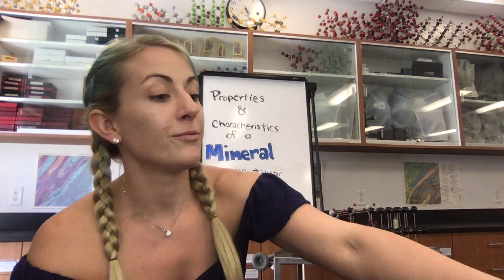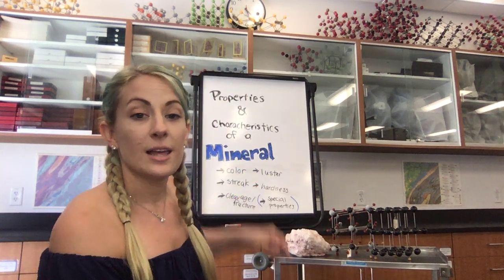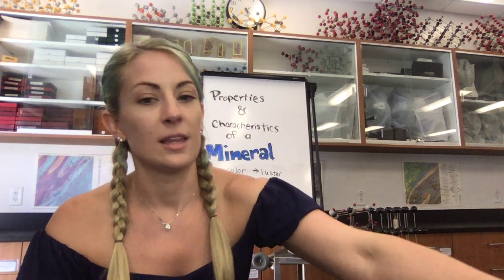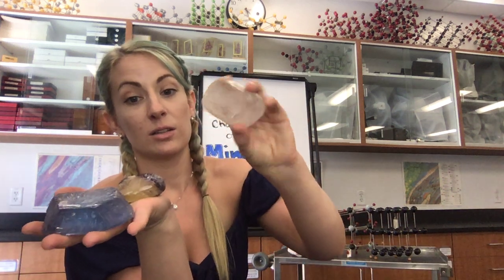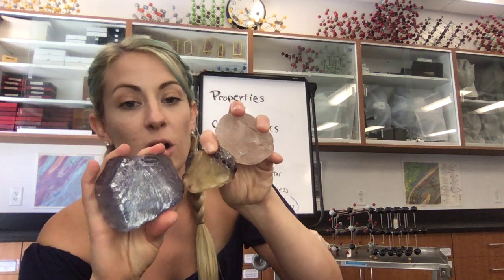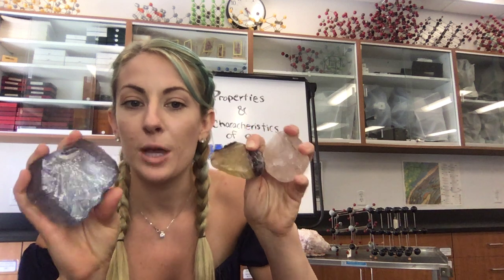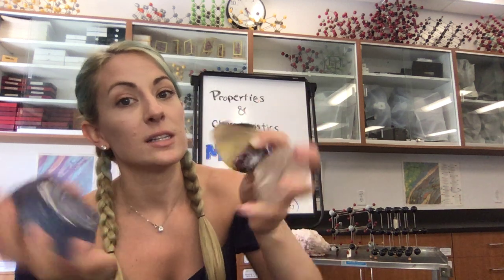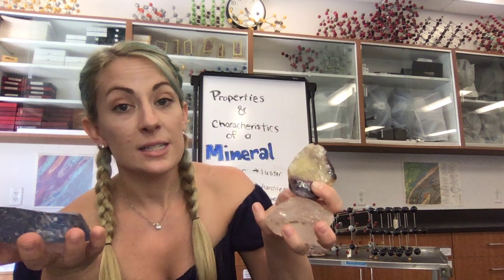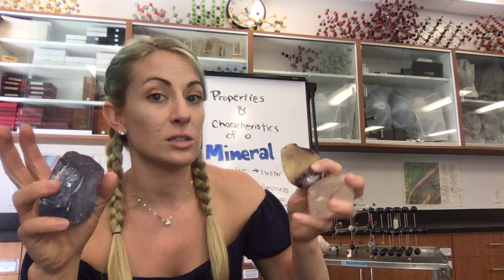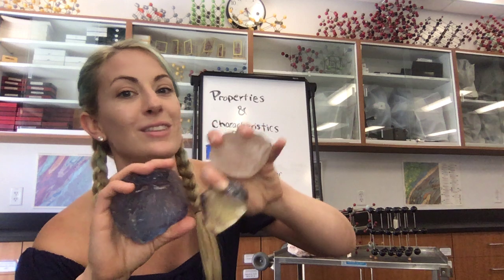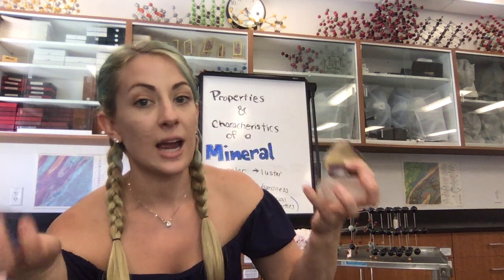Our first characteristic is color. This one is the easiest — unless you're colorblind — but you can look at a specimen and say that is yellow, that is blue, this one is yellow-purple, and this one is a clear to white color. These three specimens are all fluorite, all the same mineral, however the color can vary because of trace impurities within the specimen. Because of that variation, and perhaps differences in luster, color is a poor diagnostic tool.